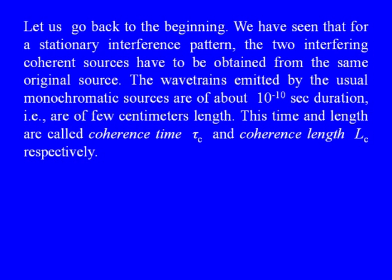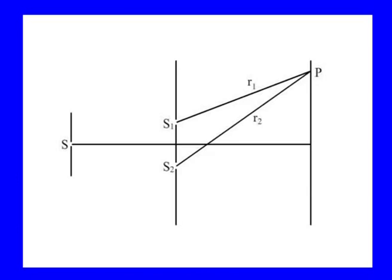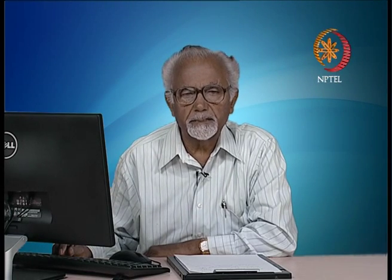This time and length are called the coherence time tau-c and coherence length l-c respectively. Let us consider Young's two-hole experiment to see what these things really mean. S is the basic source, S1 and S2 are the two holes forming a pair of coherent sources. Then the light is reaching the screen where the point P is, and R1 and R2 are the distances S1P and S2P.